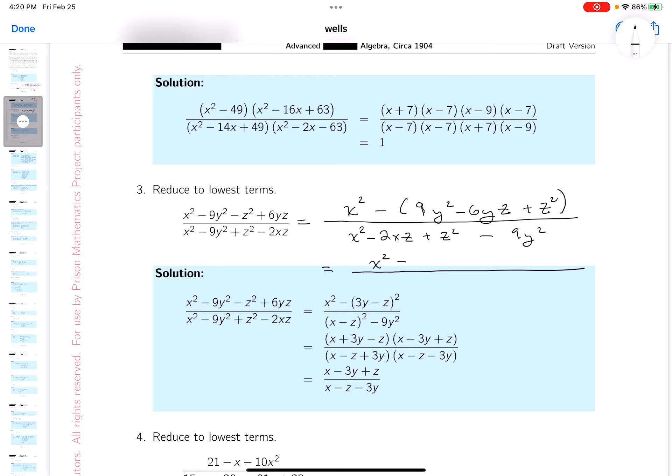Some students are very fast at this, other students are slow. Work at your pace. x plus 3y minus z quantity squared.